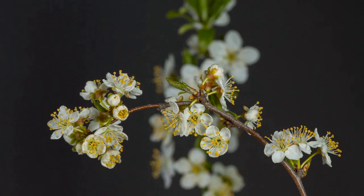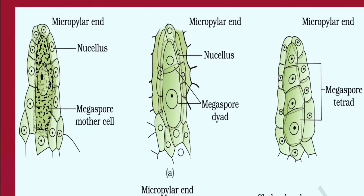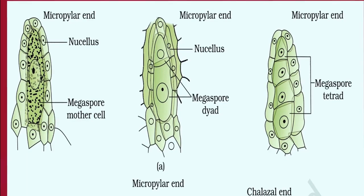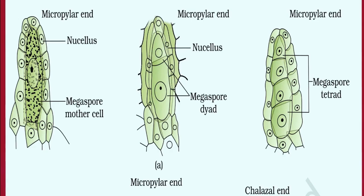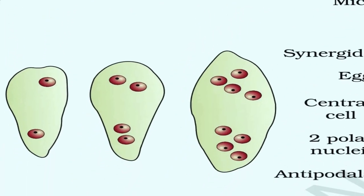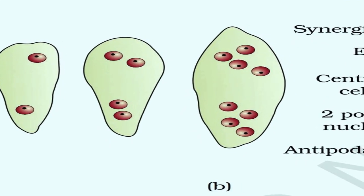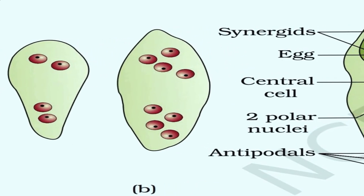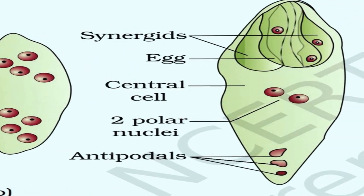Now we are going to discuss the formation of the embryo sac. The embryo sac represents the female gametophyte. The functional megaspore undergoes three successive mitotic divisions without immediate cell wall formation — this is called free nuclear division. The first division gives two nuclei, the second gives four nuclei, and the third gives eight nuclei.